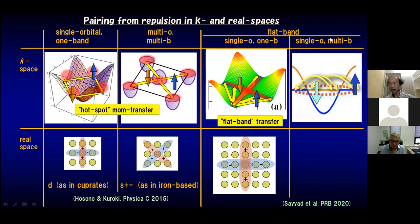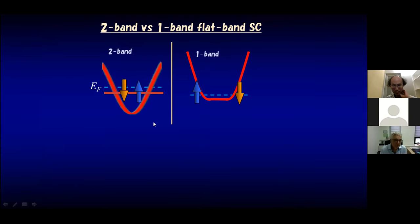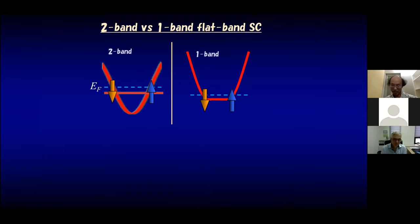If we go to the single-orbital multiband case, such as a dispersive band accompanying a flatband, then we can have a similar bunch of Cooper pair transfer channels. For the flatbands, we have either two-band or one-band cases. In the two-band case, Cooper pairs can virtually hop between the dispersive and flat bands. In the one-band case with a partially flat portion, we can again have this kind of Cooper pair exchange processes.